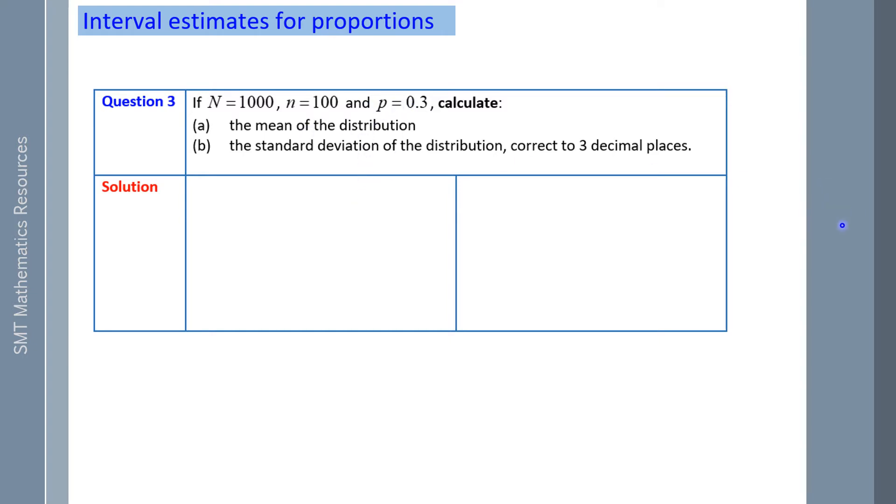Let's calculate the mean of the distribution. Now, a population mean is the actual percentage of successes in the population. The sample proportion of successes, which is P hat, should model that, and that's also 0.3.